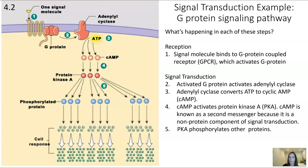Steps two through five are the signal transduction portion. In step two, the activated G protein activates adenylyl cyclase. Step three: adenylyl cyclase converts ATP to cyclic AMP. Step four: cyclic AMP activates protein kinase A, also called PKA. cAMP is called a second messenger — a non-protein component of signal transduction — and it's a very common one. cAMP's job in this pathway is to activate PKA, and in step five, PKA phosphorylates other proteins.